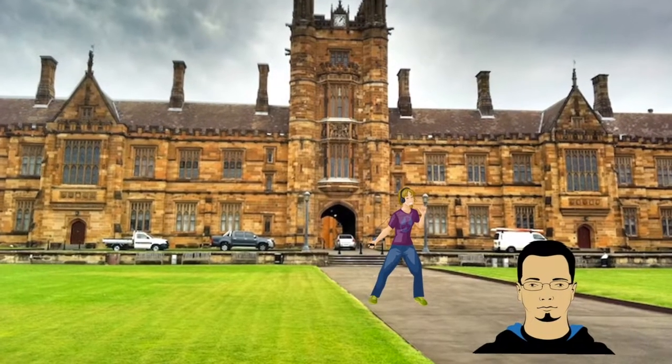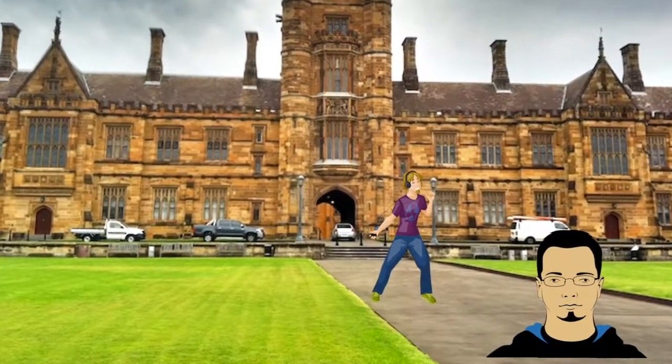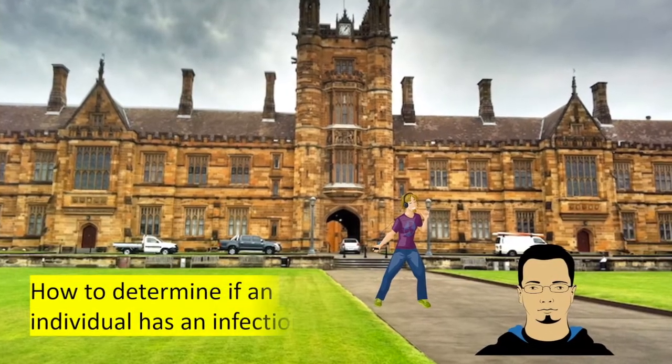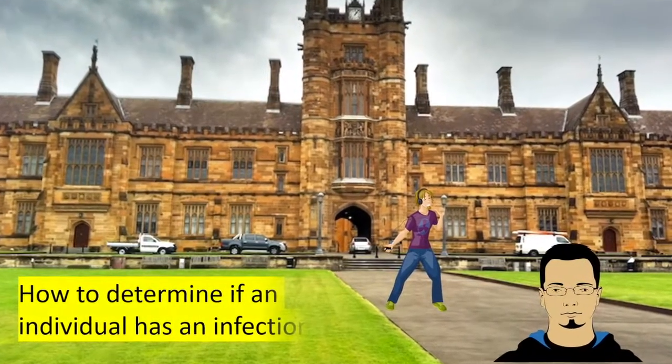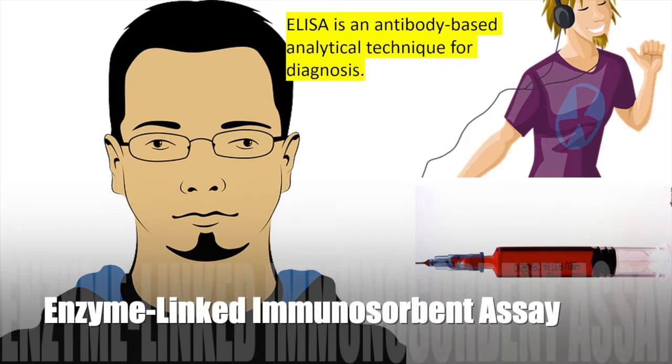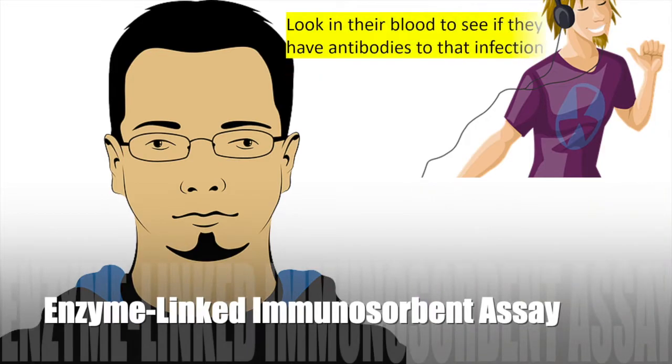How do we tell if two individuals that look very healthy have been exposed to a particular pathogen in the past? We could try and use an ELISA to detect antibodies in the blood of the individual.